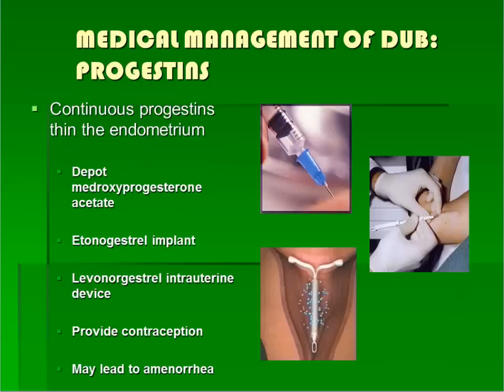Progestins can also be used in a continuous fashion, daily throughout the month. They can be administered as a shot, a subdermal implant, an intrauterine device, or as oral pills. Continuous progestin does provide contraception and may significantly lighten menstrual flow, or lead to its cessation completely, referred to as amenorrhea.